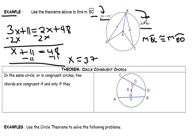So 2 times 37 plus 48 is 122. And if I do 3 times 37 plus 11, I also get 122. So the measure of arc BC is 122.